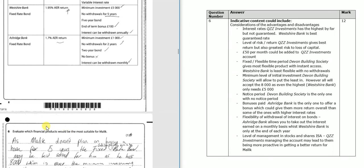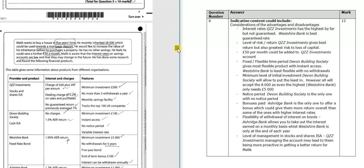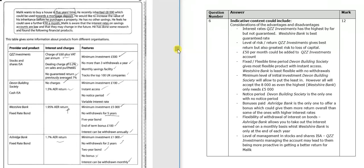So it says: evaluate which financial products would be the most suitable for Malik. We can see this student has achieved six out of 12. That should really help to reassure you that you don't need a perfect answer every single time in order to give yourself a real shot of getting a distinction grade. This student got a distinction, but you don't need to respond to every question perfectly.